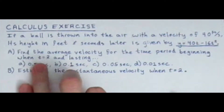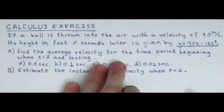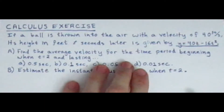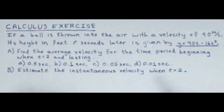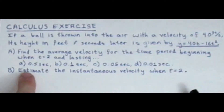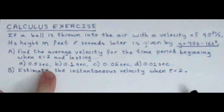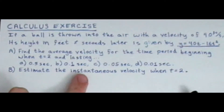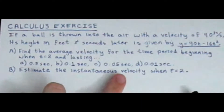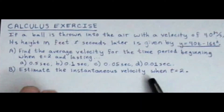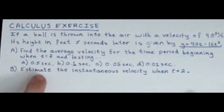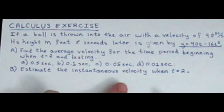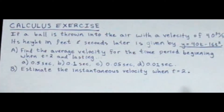Part A is to find the average velocity for the time period beginning when t equals 2 and lasting: A, 0.5 seconds; B, 0.1 seconds; C, 0.05 seconds; and D, 0.01 seconds. Part B says estimate the instantaneous velocity when t equals 2.